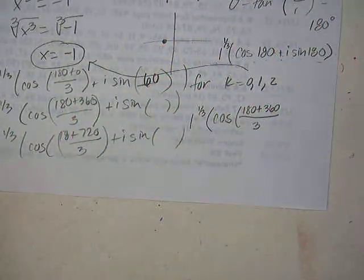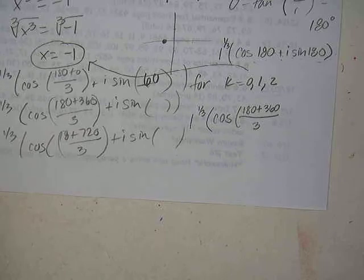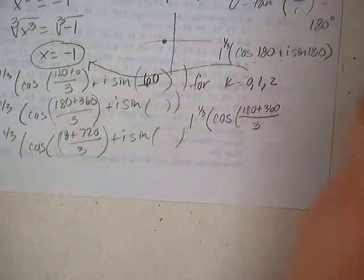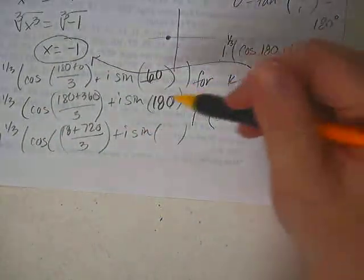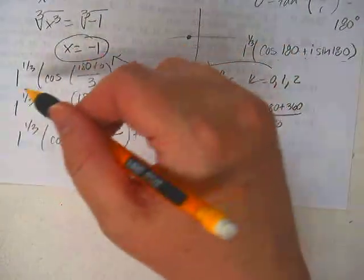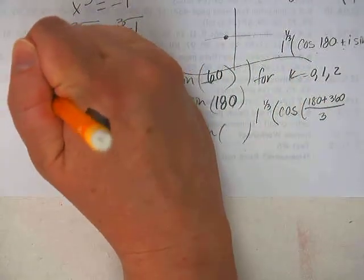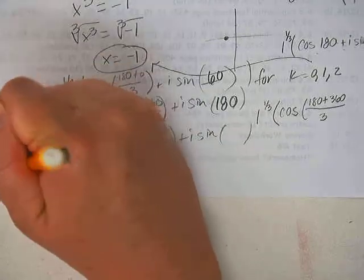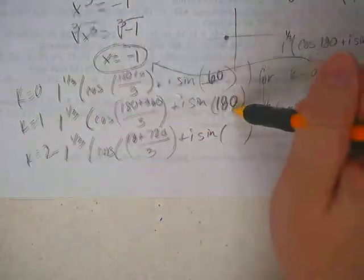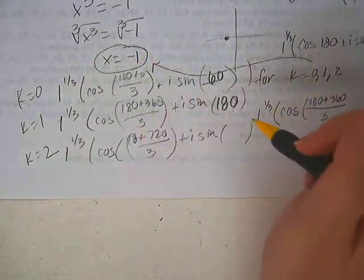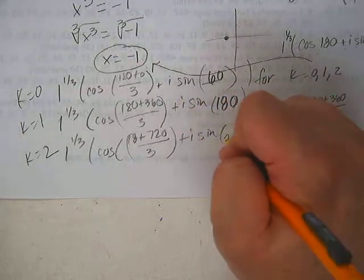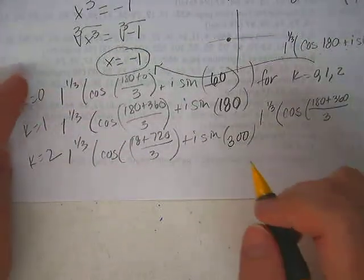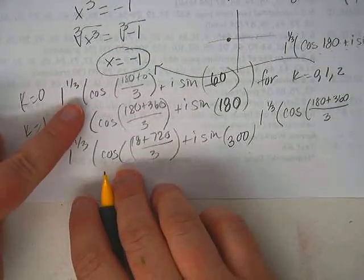So 180 divided by 3 is actually 60. 180 plus 360, for some reason I'm not calculating in my head very well today. 540 divided by 3. Oh, there's the answer. So there's the 180 answer. So that answer actually comes from k equals 1. So this is k equals 0, k equals 1, k equals 2. And k equals 1 gives us the negative 1 answer. And then the last one would be 180 plus 720 divided by 3, which is 300.